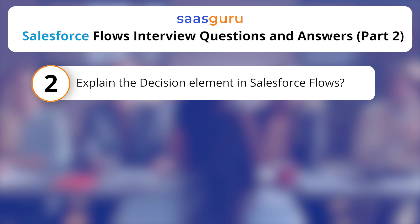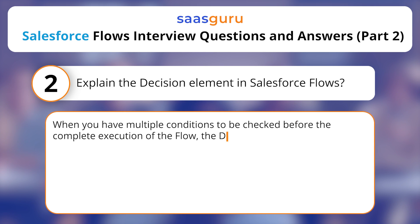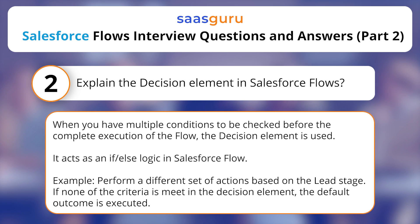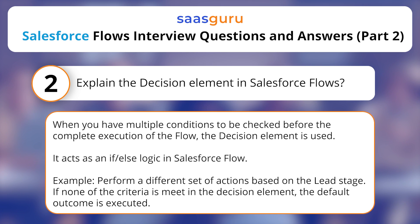Explain the decision element in Salesforce flows. When you have multiple conditions to be checked before the complete execution of the flow, the decision element is used. It acts as an if-else logic in Salesforce flow, performing a different set of actions based on the lead stage. If none of the criteria is met in the decision element, the default outcome is executed.